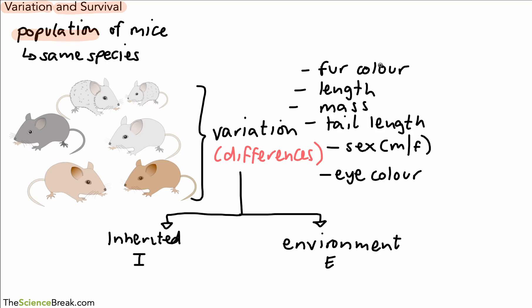So the fur color, this is going to be inherited from the parents. The length of the mouse, this could be potentially inherited. Parent mice that are long potentially could have baby mice that are also going to grow up to be long. However, if the diet of the mouse is not very good or it's not getting enough nutrients, it might not become as long as it possibly could be. So that could be a cause of the environment as well.